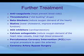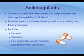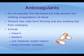The next few slides discuss treatments for acute coronary syndrome in greater detail. Anticoagulant medications, often called blood thinners, do not actually thin the blood, but help prevent the clotting or coagulation of blood. They prevent new clots from forming or an existing clot from enlarging. Examples of anticoagulants include heparin, warfarin, and low molecular weight heparin.